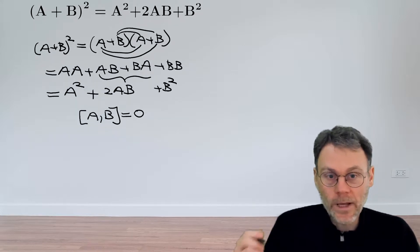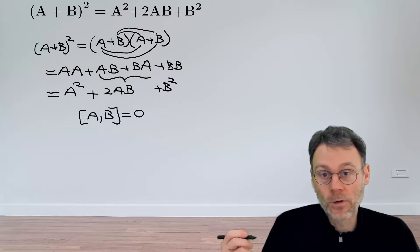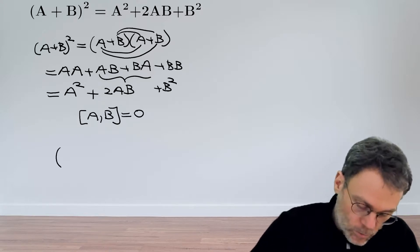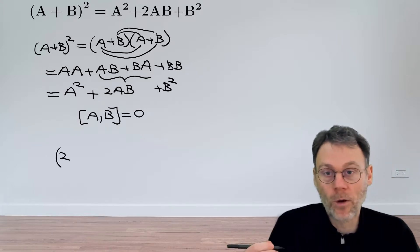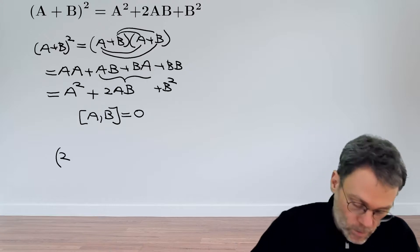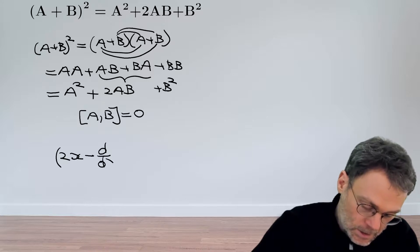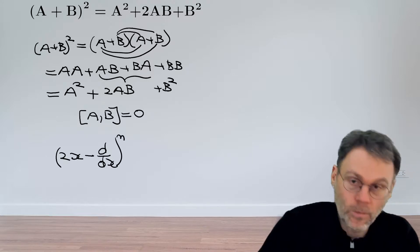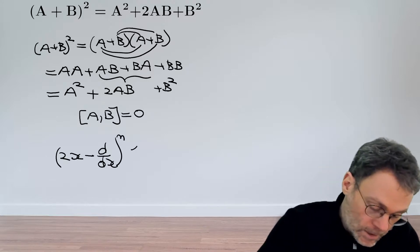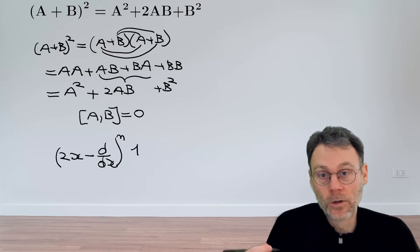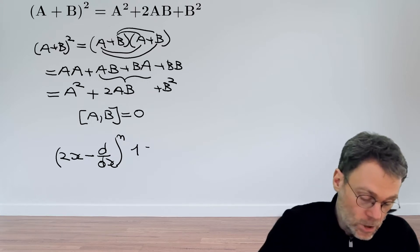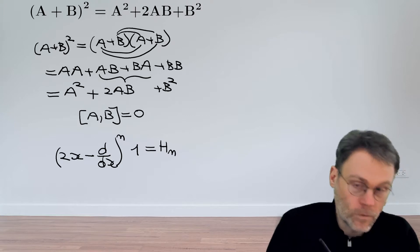This relates to an exercise from the chapter on Hermite polynomials, where we looked at sums of operators raised to a power. We had (2x - d/dx)^n operating on the constant 1, which gave us the Hermite polynomial of order n.